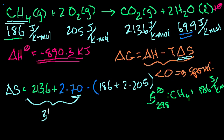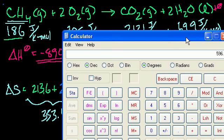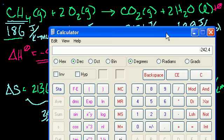And then from that, I'm going to subtract out, so 186 plus 2 times 205 is equal to 596. So minus 596, and what does that equal to? So we put the minus 596, and then plus the 353.6, and we have minus 242.4.